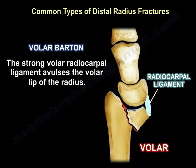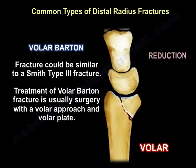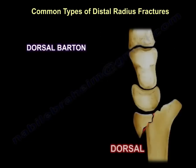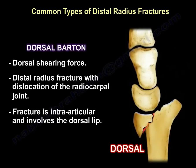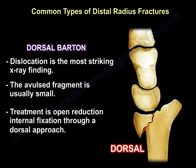Volar Barton fracture is very similar to a Smith Type 3 fracture. Treatment of volar Barton fracture is usually surgery via a volar approach with a volar plate. For dorsal Barton fracture, a dorsal shearing force produces an intra-articular distal radius fracture with dislocation of the radiocarpal joint involving the dorsal lip. The wrist is dislocated and the avulsed fragment is usually small. Treatment is open reduction and internal fixation through a dorsal approach.